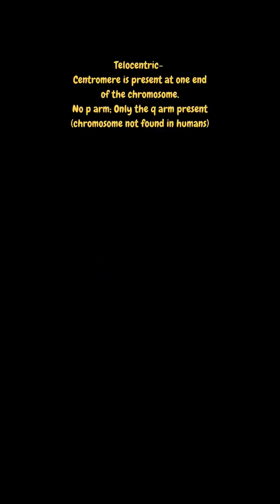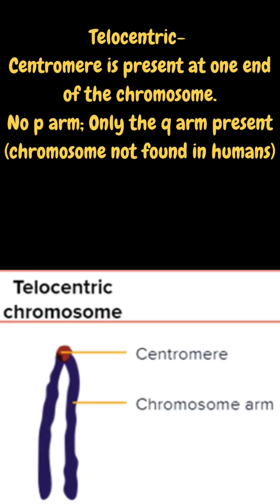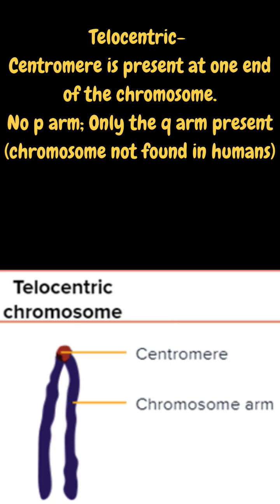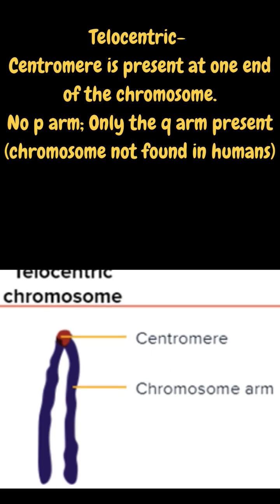Fourth type is Telocentric. In Telocentric, the position of the Centromere is at the end of the chromosome. The P arm is absent and only the Q arm is present.